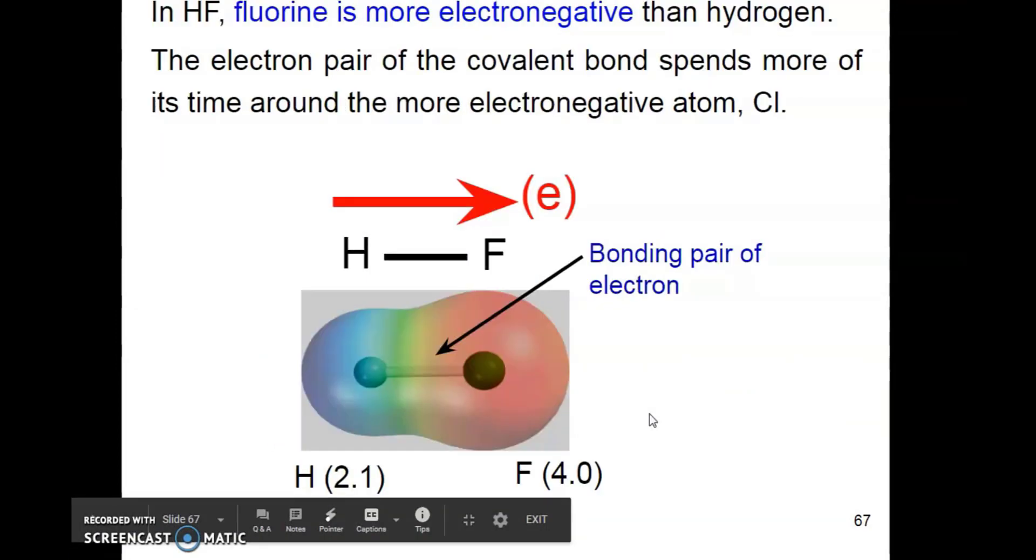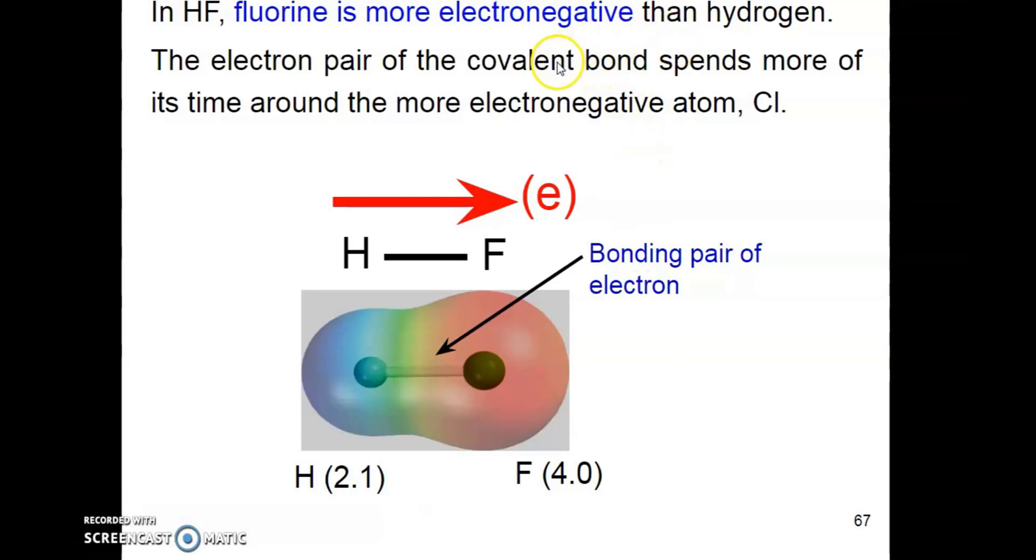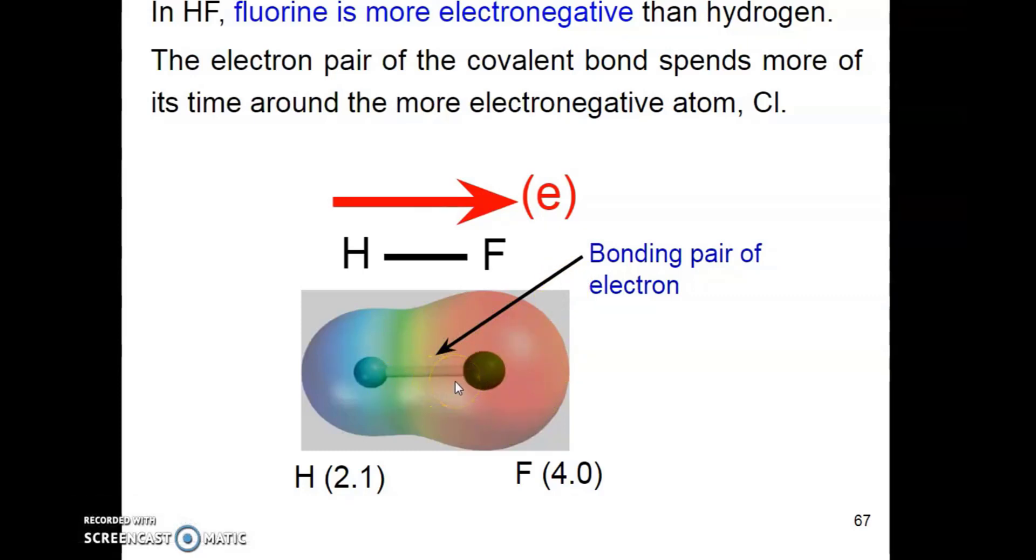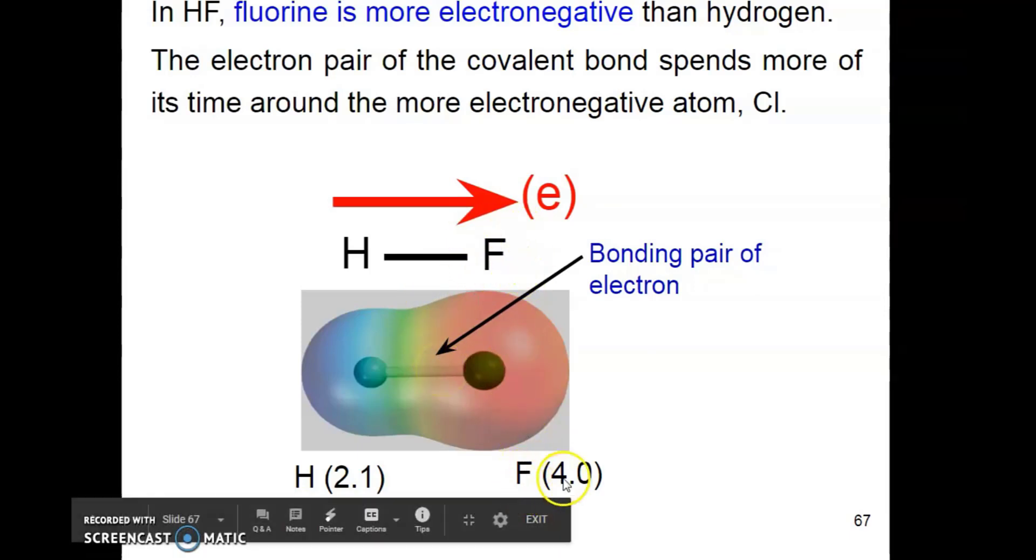Fluorine is highly electronegative. Therefore, fluorine has a very strong ability to attract electrons towards itself. You can see here we have hydrogen fluoride molecule that consists of hydrogen and fluorine atom with a covalent bond. The covalent bond involves a shared pair of electrons and is the strong electrostatic attraction between a shared pair of electrons and the nucleus of the bonded atoms.